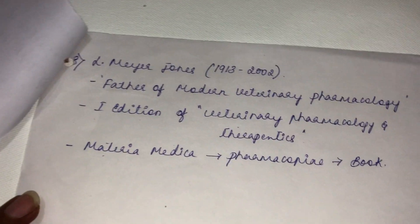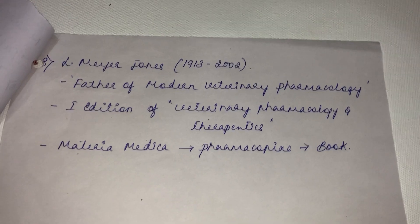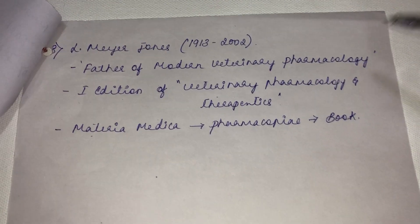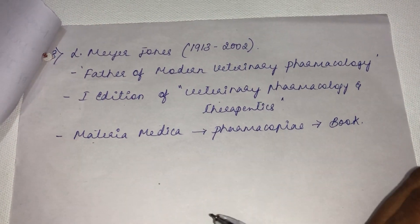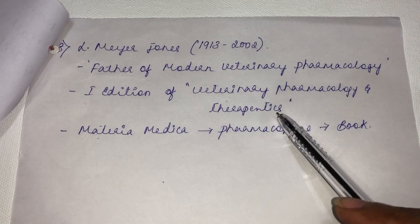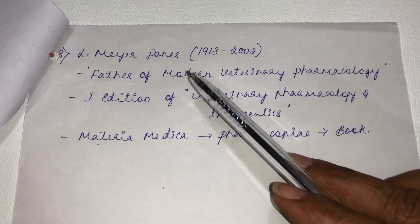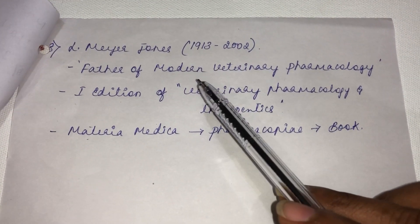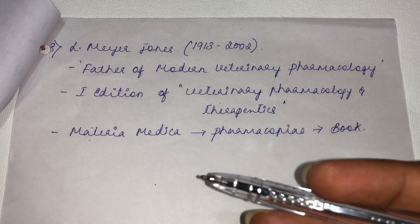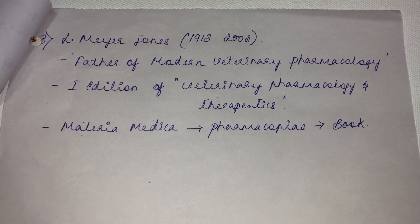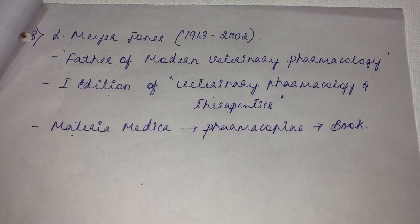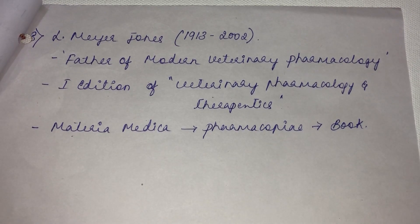L. Meyer Jones is rightly considered the father of modern veterinary pharmacology, as he was the first person to write a book pertaining to veterinary pharmacology — the first edition of Veterinary Pharmacology and Therapeutics. Jones' pharmacology textbook is still available and was widely used before H.S. Sandhu's textbook became available.